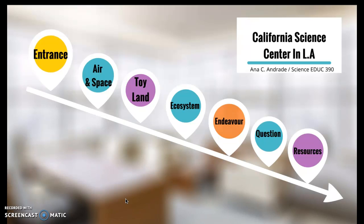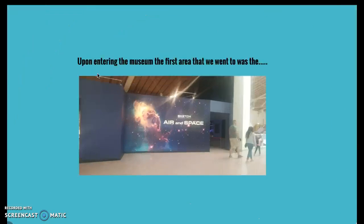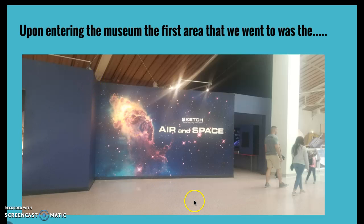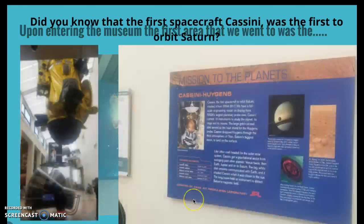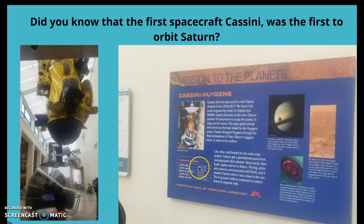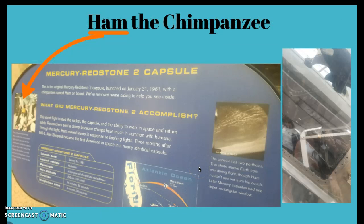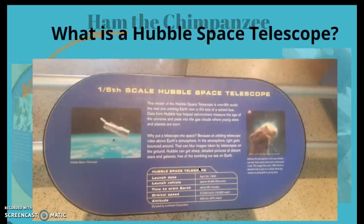I've created seven stations. The first five — entrance, air and space, toyland, ecosystem — have videos and pictures of the expositions, so that children can have a more realistic feeling of what I saw and what they can see if they were to go there.